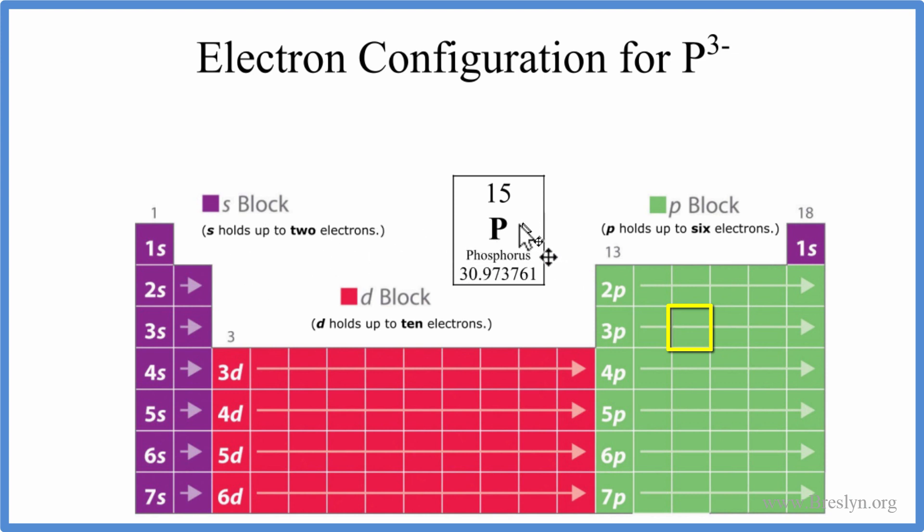Let's write the electron configuration. We use this periodic table here where we have it broken up into the different orbital blocks. You can also use this chart right here. There's a link in the description how to do that. But this makes a lot more sense to me. So we have phosphorus and we have 15 electrons.